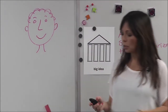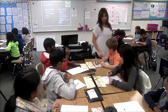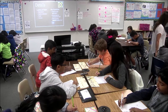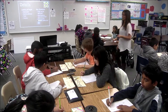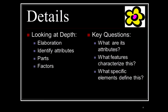So when your teacher is asking you about details, she may say 'what are his attributes in the story?' or 'what features characterize this?' or 'what specific elements define this?' As a table, pick what words you think are going to help you remember what details are. The tables are coming up with: attributes, attributes and features. So the key words we found were attributes and elaboration — elements of the story.